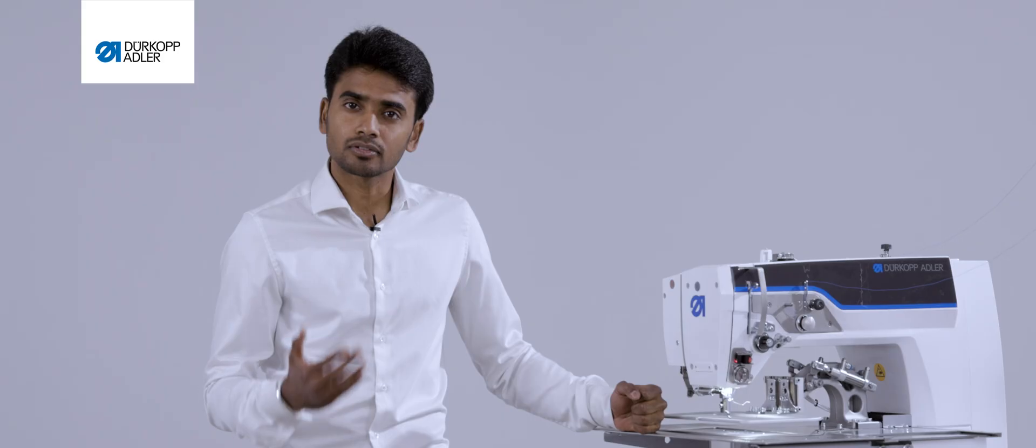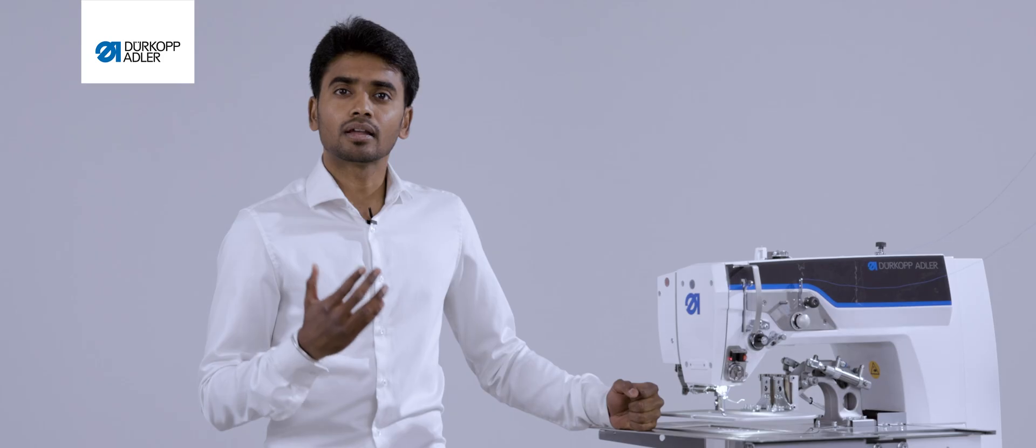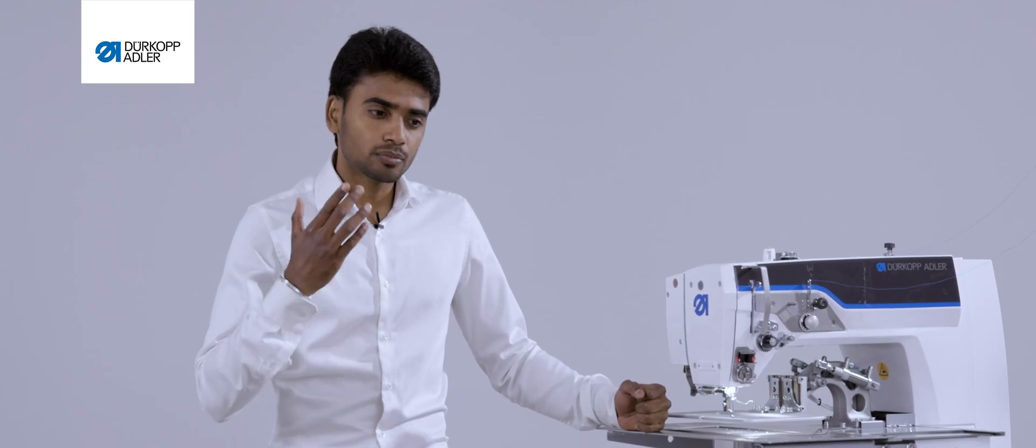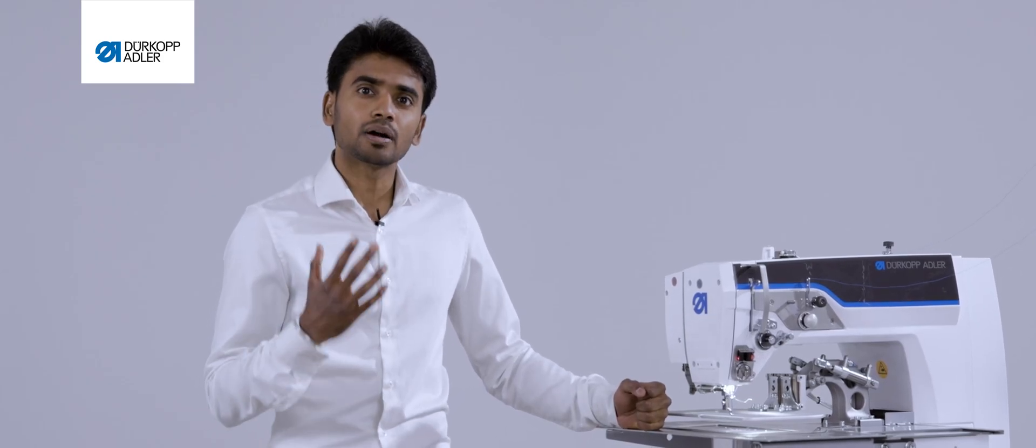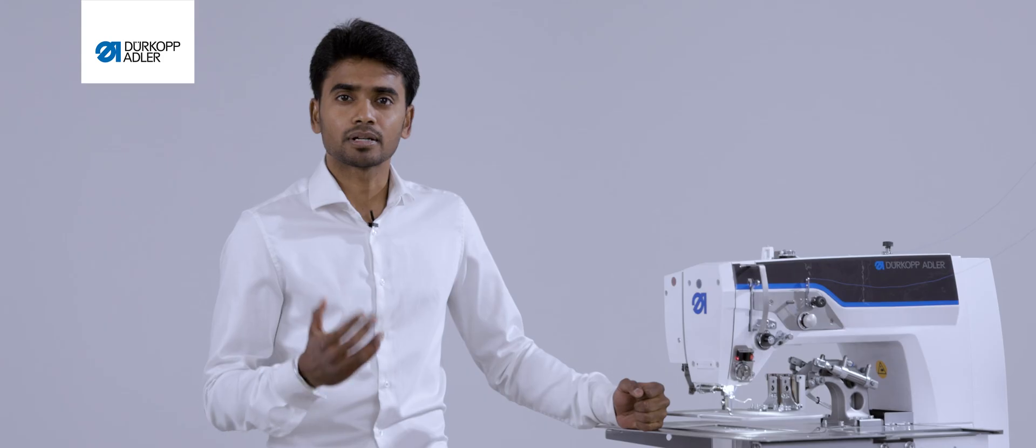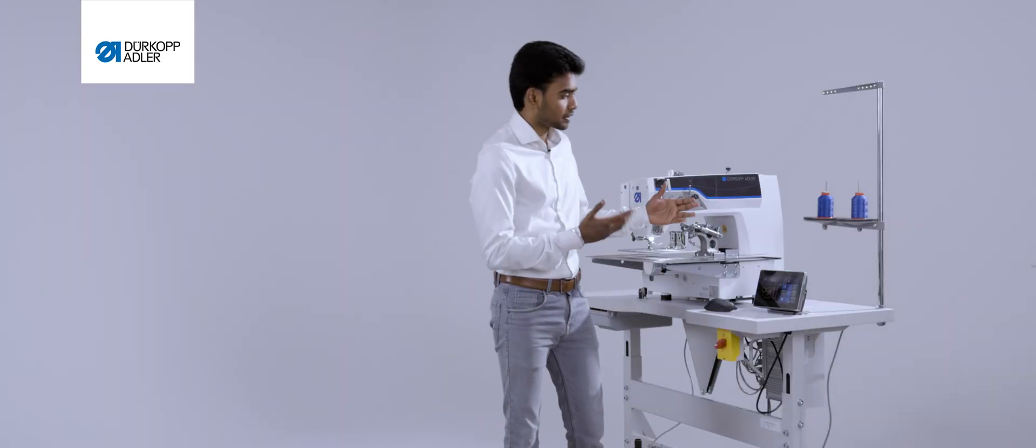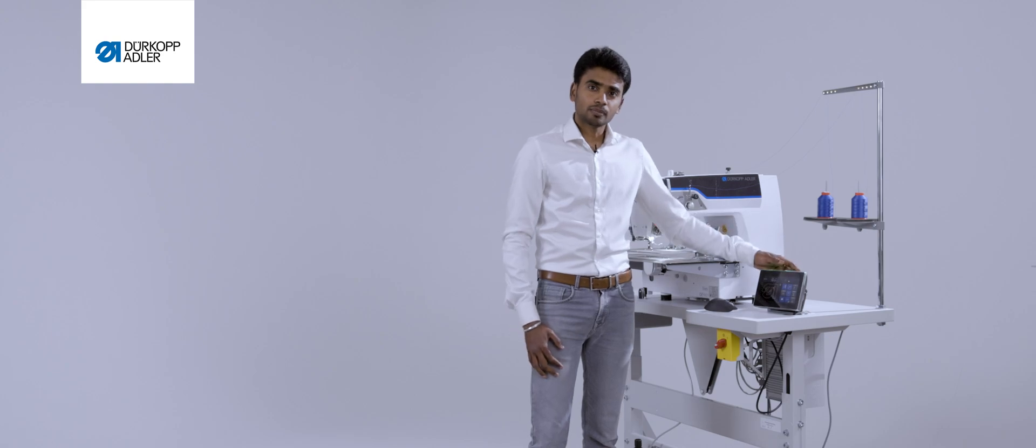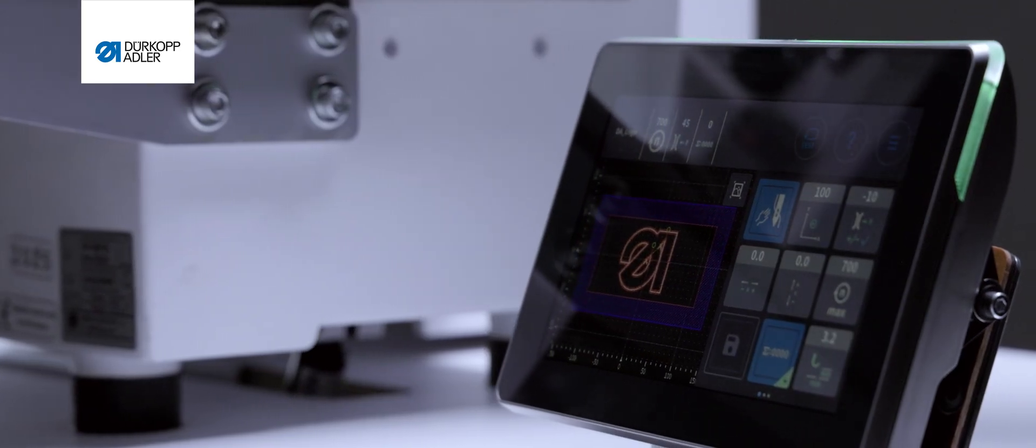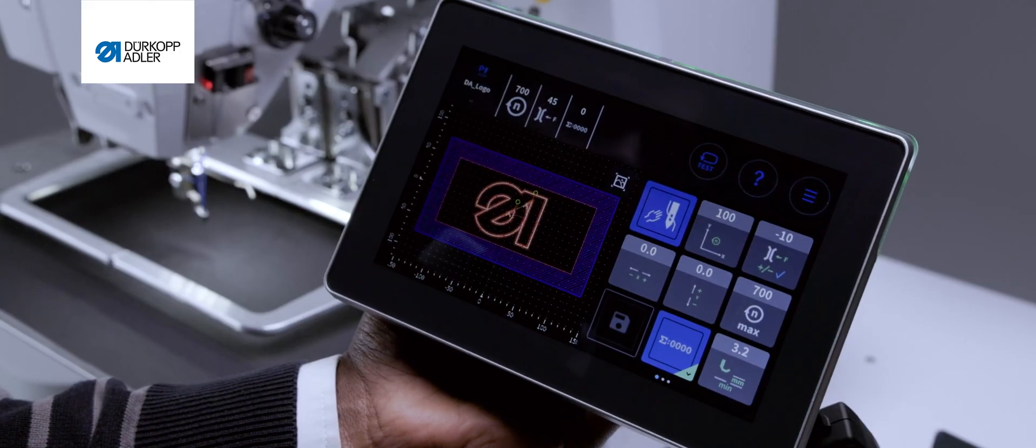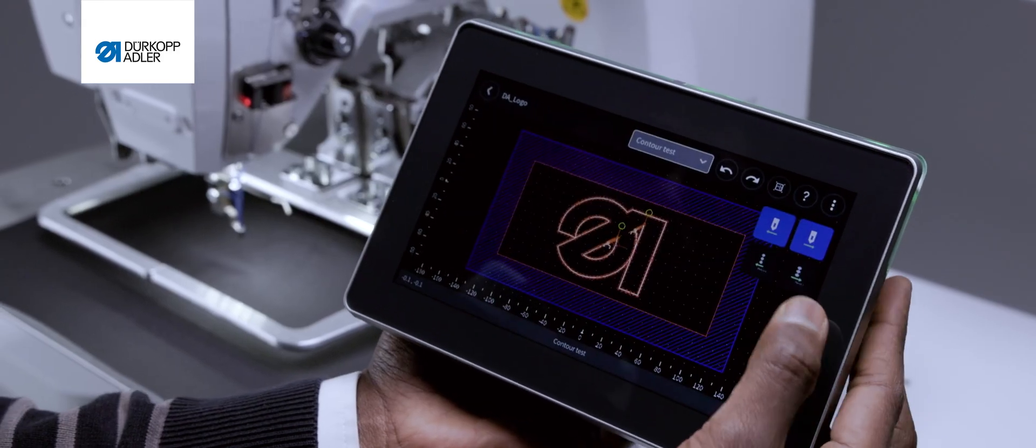We came back to the table and asked ourselves, how could we deliver a better sewing machine? How could we deliver a machine which is much simpler to use like a smartphone and which would deliver stitch by stitch a better quality and a better result? That's when we began with our control panel. The control panel is sleek and easy to use.